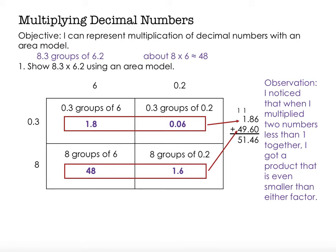I went ahead and added those together, and you can see my product is 51 and 46 hundredths. I estimated that the product would be about 48, but I knew it would be a little more than 48, because I was multiplying a little more than 8 times a little more than 6. So my actual product of 8 and 3 tenths times 6 and 2 tenths is 51 and 46 hundredths. Thanks for watching!